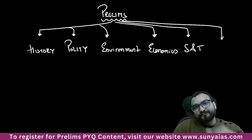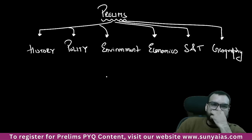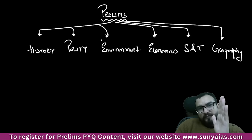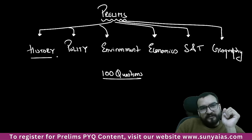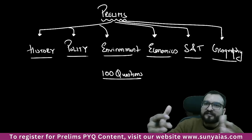History, polity, environment, economics, science and tech, geography — these are your major static subjects. From these static subjects, when you analyze the recent prelims, there are 100 questions being asked. For all these subjects, you have your standard sources. That is why this subject is important — you cannot leave ancient and medieval history, or for the sake of prelims, you cannot leave any subject which is written in your syllabus.